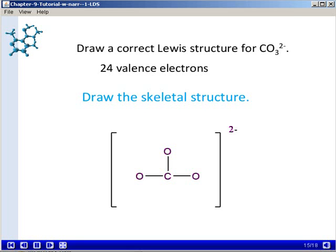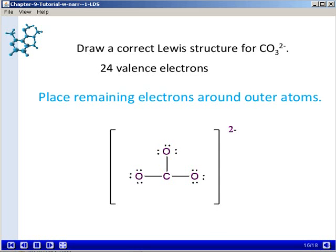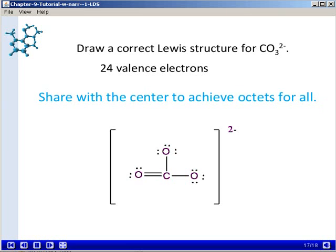Make sure you show the minus 2 charge, because this is an ion, and those electrons are included in the dot structure as dots. We're going to place remaining electrons around the outer atoms to satisfy the octet rule for all three oxygen atoms. And that uses up all of our 24 electrons.